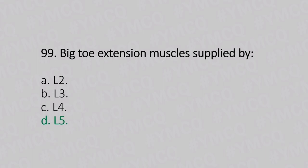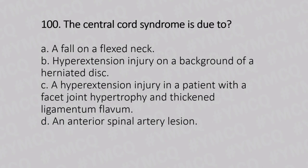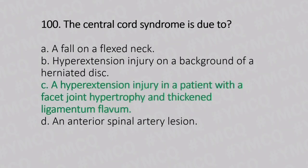Now let's move to question number 100. The central cord syndrome is due to. Option A: a fall on the flexed neck. Option B: hyperextension injury on the background of a herniated disc. Option C: a hyperextension injury in a patient with facet joint hypertrophy and thickened ligamentum flavum. Option D: an anterior spinal artery lesion. And the answer is Option C, a hyperextension injury in a patient with facet joint hypertrophy and thickened ligamentum flavum.